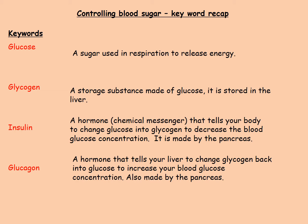Glucagon is the antagonistic hormone, working in the reverse way to insulin. It is produced by the pancreas and travels in the blood to liver and muscle cells, where it causes glycogen to be turned back into glucose, which is released into the blood, thereby increasing blood glucose concentration.